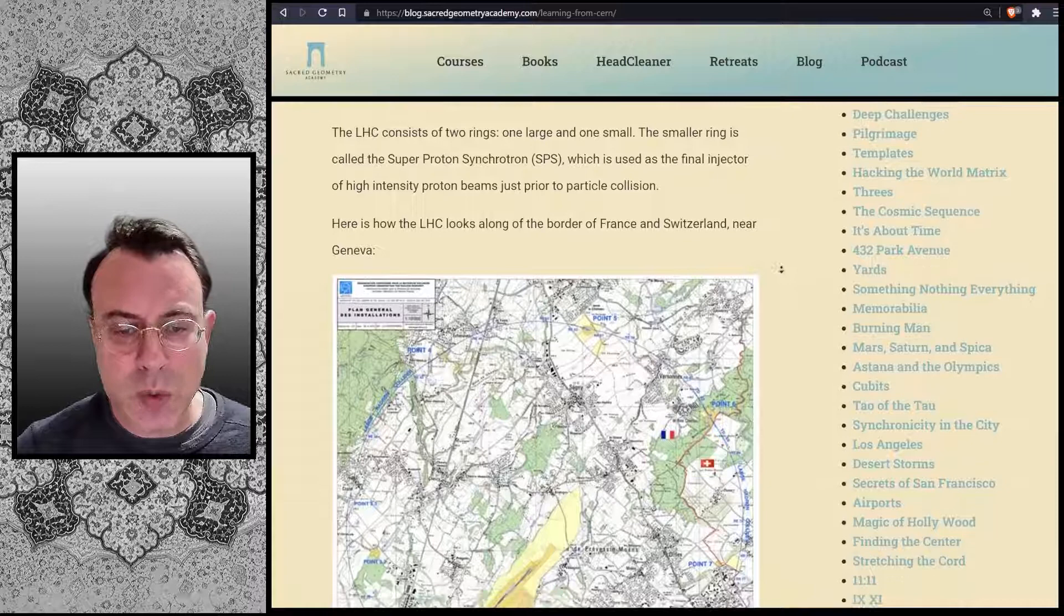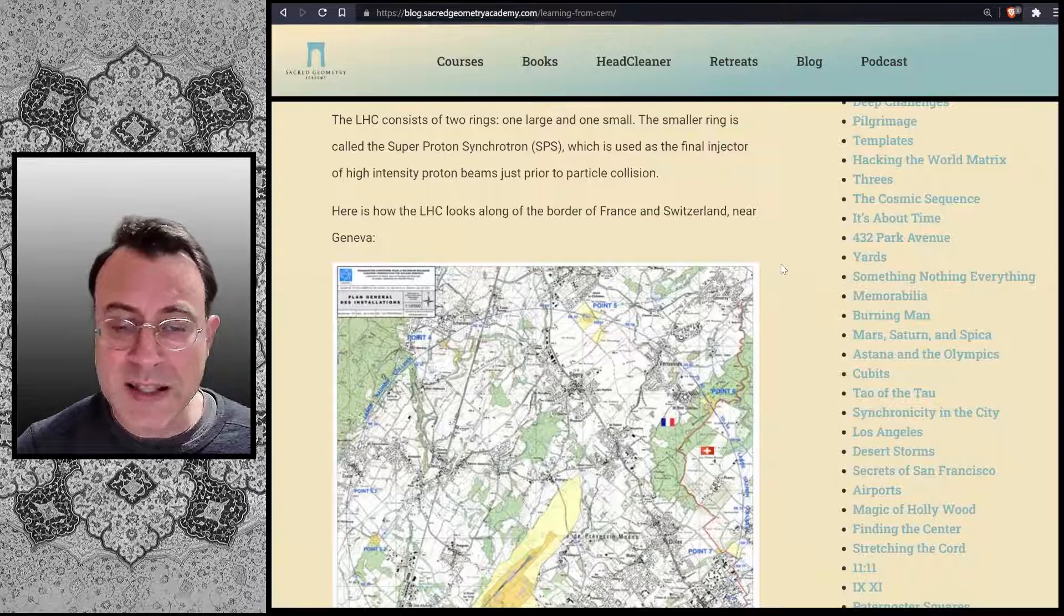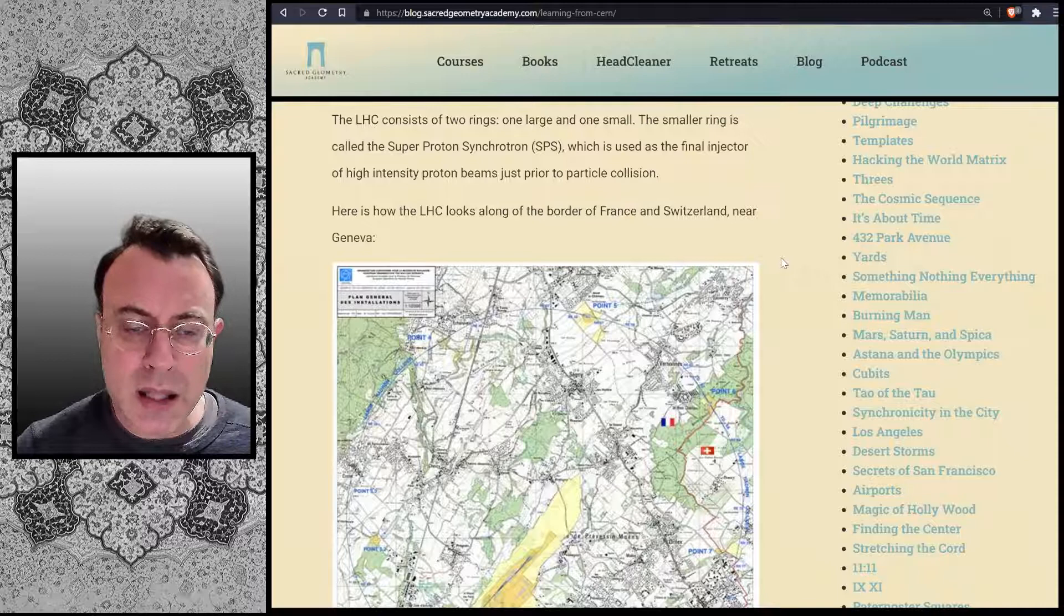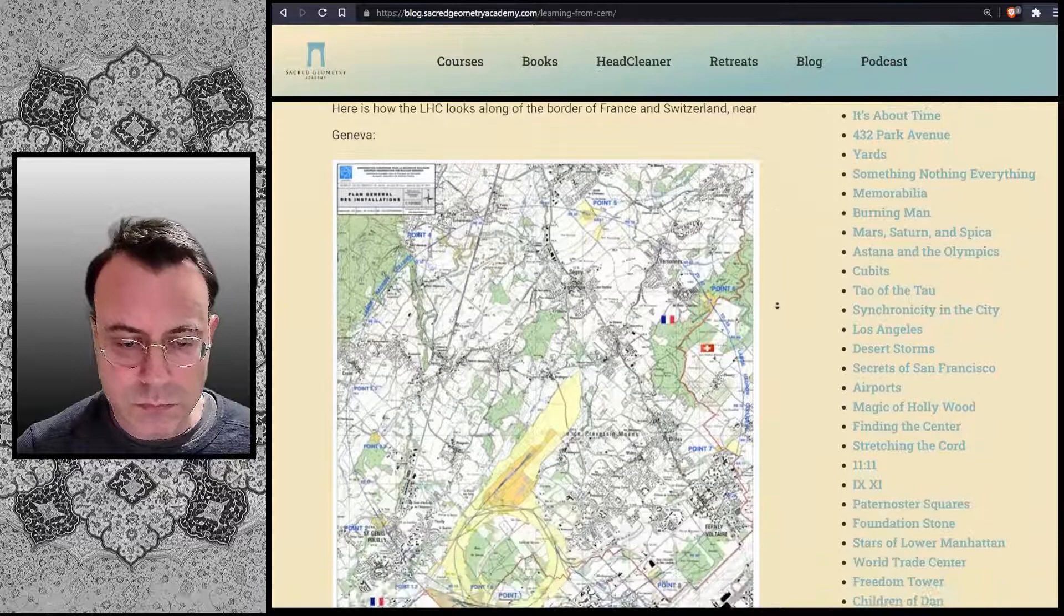The LHC consists of two rings, one large and one small. The smaller ring is called the super proton synchrotron, or SPS, which is used as the final injector of the high intensity proton beams just prior to particle collision. Here is how the LHC looks along the border of France and Switzerland near Geneva.